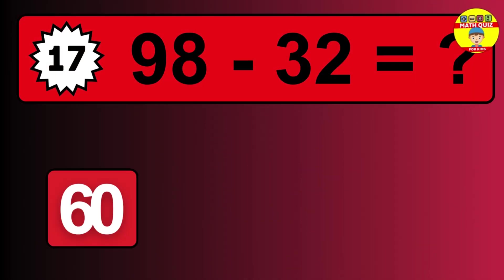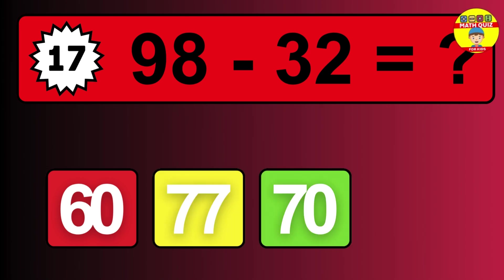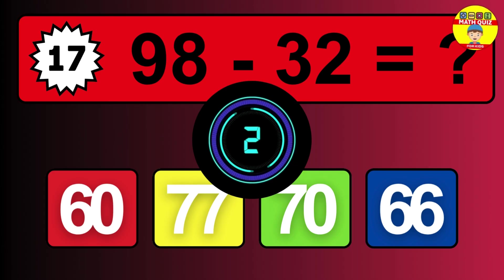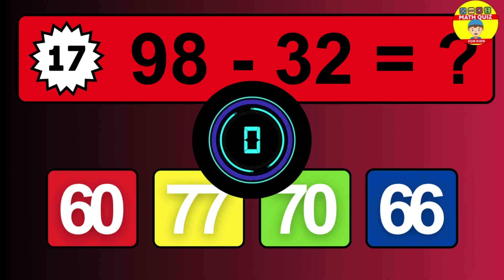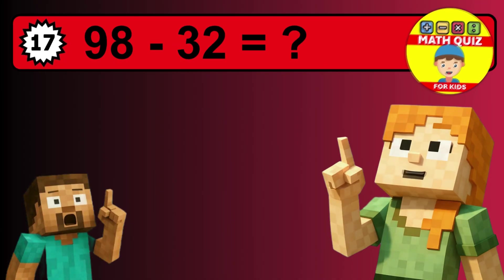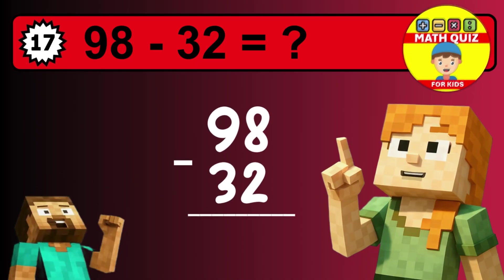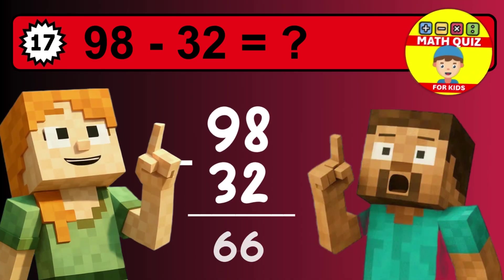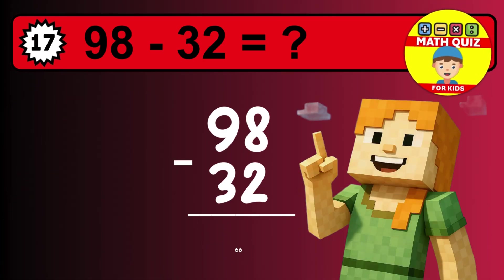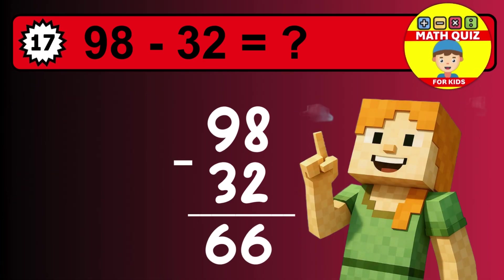What is 98 minus 32? Time to think. Let's solve this step by step. Then we go to the tens: 9 minus 3 is 6. The final answer is 66.